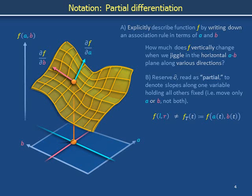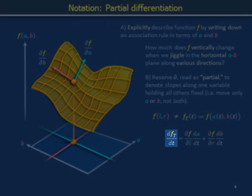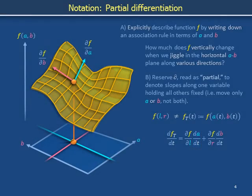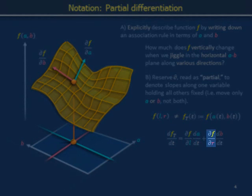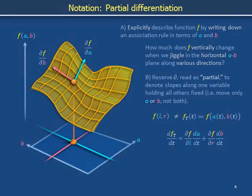Explicitly describing related but distinct functions as we have done on this slide can make it easier to understand equations in which they appear simultaneously. For example, we may wish to state that the derivative of the single variable function f_T with respect to time t equals the partial derivative of a different function f with respect to its left slot multiplied by the derivative of the function a with respect to t plus the partial derivative of the function f, again not f_T but instead f, with respect to its right slot multiplied by the derivative of the function b with respect to time.